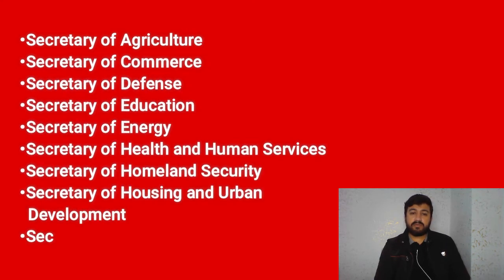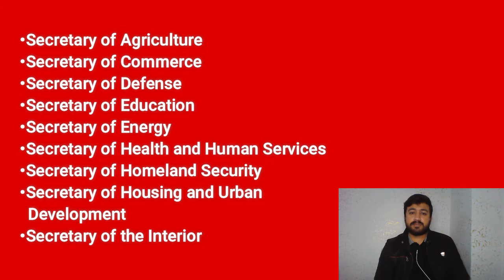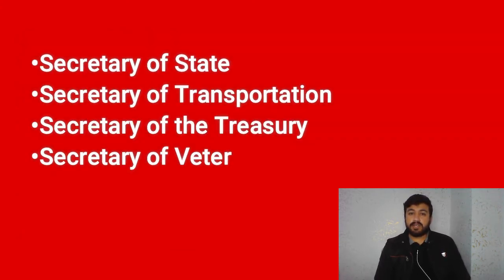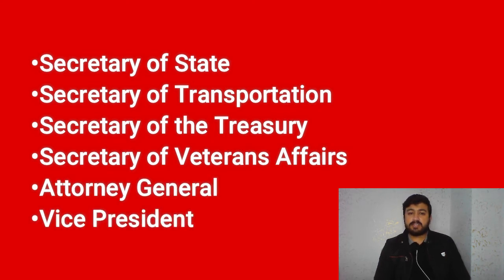What does the president's cabinet do? Advise the president. What are two cabinet-level positions? Secretary of Agriculture, Secretary of Commerce, Secretary of Defense, Secretary of Education, Secretary of Energy, Secretary of Health and Human Services, Secretary of Homeland Security, Secretary of Housing and Urban Development, Secretary of the Interior, Secretary of Labor, Secretary of State, Secretary of Transportation, Secretary of Veterans Affairs, Attorney General, and Vice President.